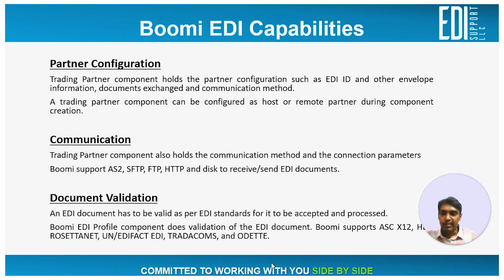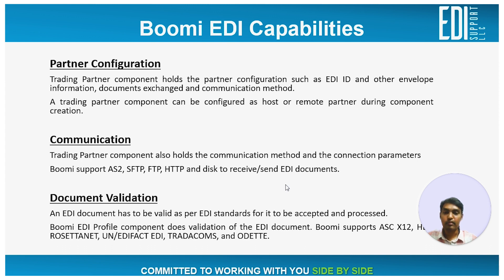The third important functionality is document validation. Document validation is a crucial functionality — the EDI system should process only a valid document. Most trading partners expect a 997 as an acknowledgement for the document that they send. If the document has validation issues, a reject 997 has to be sent out. If it's a valid document, then an accept 997 is usually sent out in a typical EDI setup.